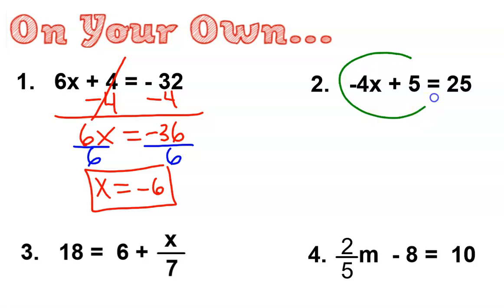Number 2, this is the side I'll be working with. Clear the constant 5, then clear the coefficient negative 4. Inverse operation. Correctly rewrite. Inverse operation.